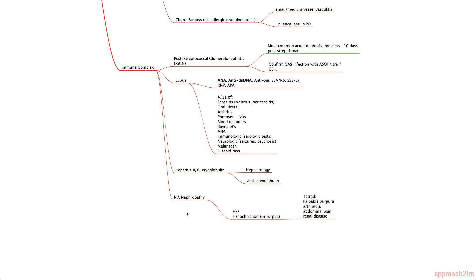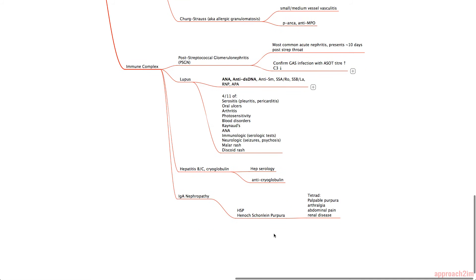IgA nephropathy is best placed under the immune complex section. The systemic form is known as HSP or Henoch-Schönlein purpura, and the tetrad to remember is palpable purpura, arthralgia, abdominal pain, and renal disease. HSP is more common in children, so it's something you'll discuss during your pediatrics rotation.